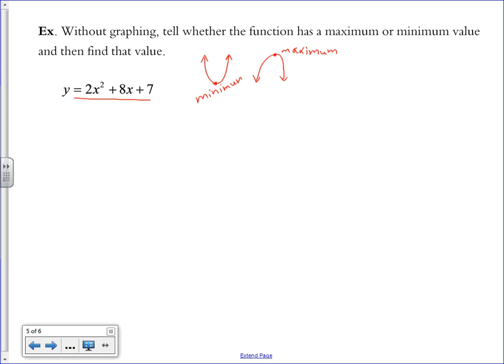Because A is positive 2 here, I know that this U is going to be concave up, open up to the sky. And therefore, it has a minimum point. So when your A value is positive, your function has a minimum. When your A value is negative, your function has a maximum.